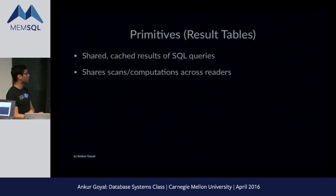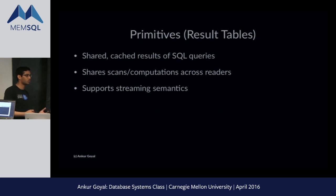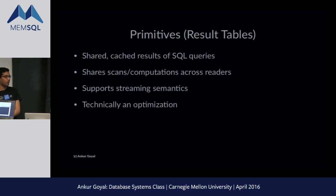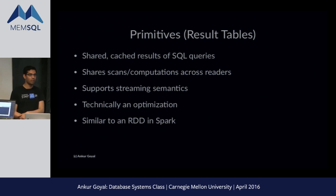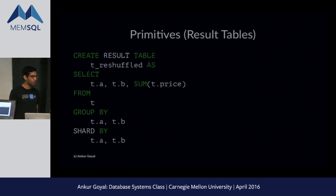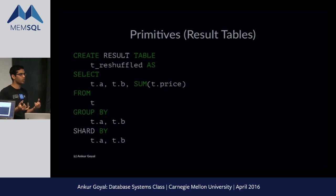Result tables are shared cached results of SQL queries that let you share the result of a scan and computation across readers. They support streaming semantics and are similar to temporary tables, but you can specify how many times you'll read from them and how many values to keep around. You can express all the primitives you need in terms of remote tables, but they're prohibitively slow without result tables. A result table and an RDD in Spark are kind of the same thing — a read-only temporary table you use some number of times that may or may not need to be materialized. Here a reshuffled version of T is created as the result of a query, sharded by a key, and if the shard keys of a remote table and result table match, you only read a small subset of pre-segregated data.